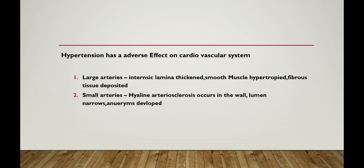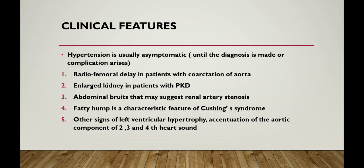Hypertension has an adverse effect on the cardiovascular system. In large arteries, the intima thickens, smooth muscle hypertrophy occurs, and fibrous tissue is deposited. In small arteries, hyaline arteriosclerosis occurs in the wall, the lumen becomes narrowed, and aneurysms may develop.